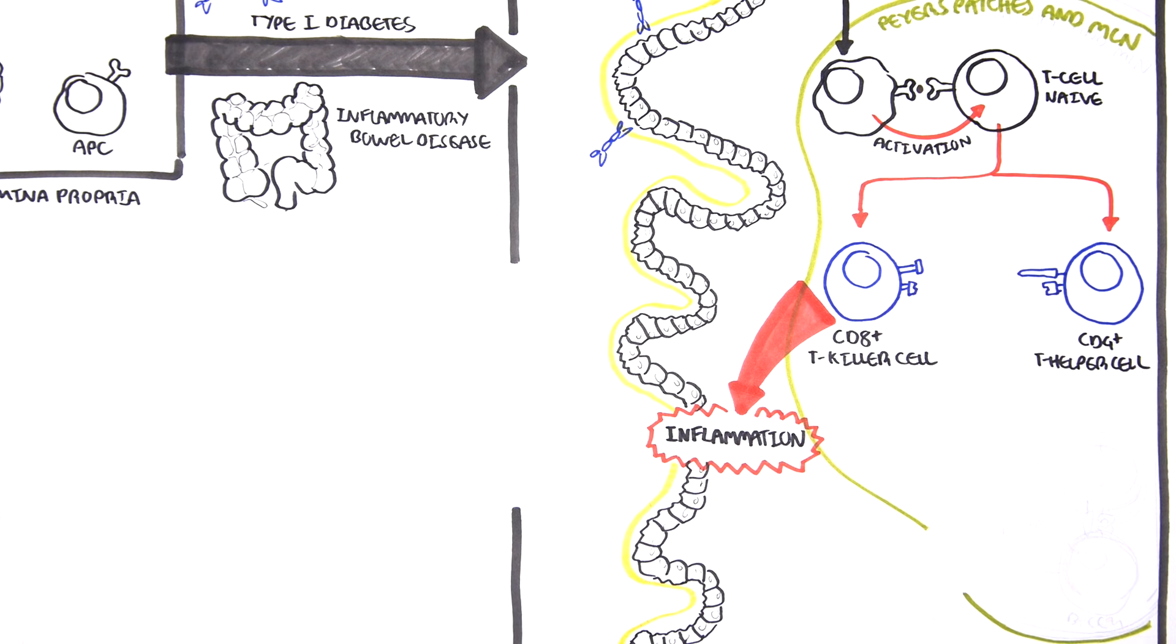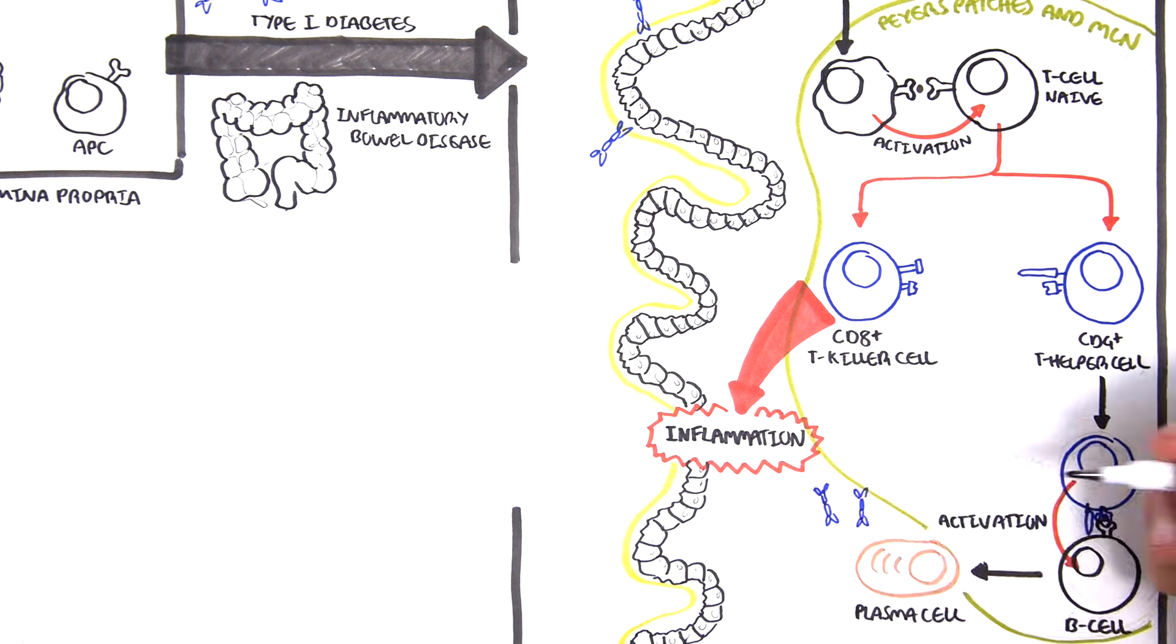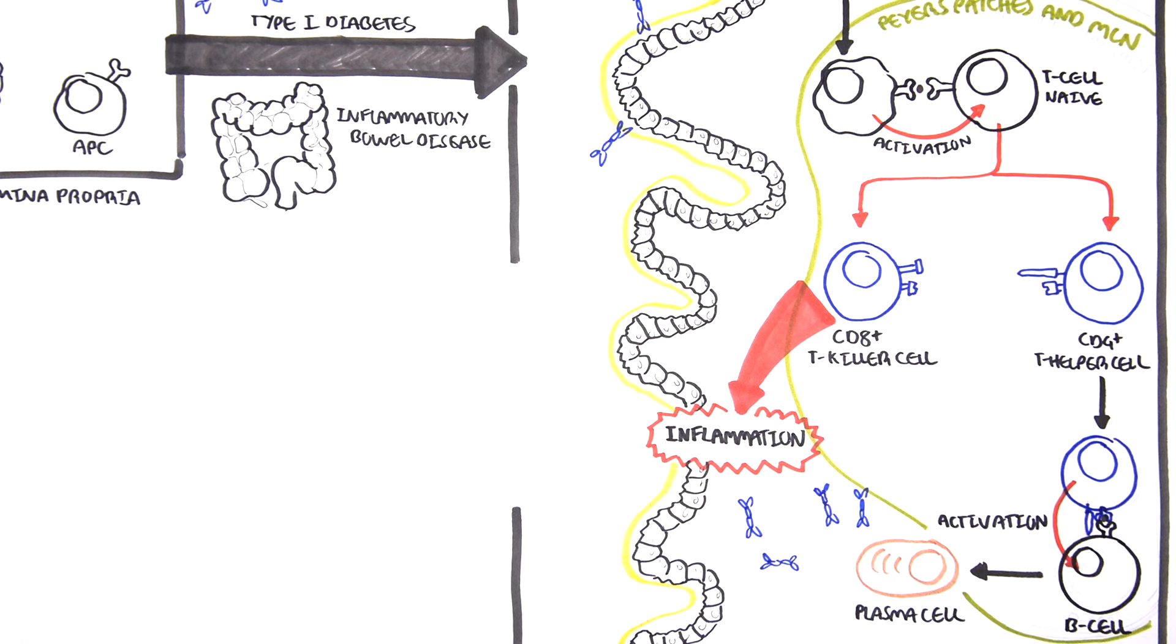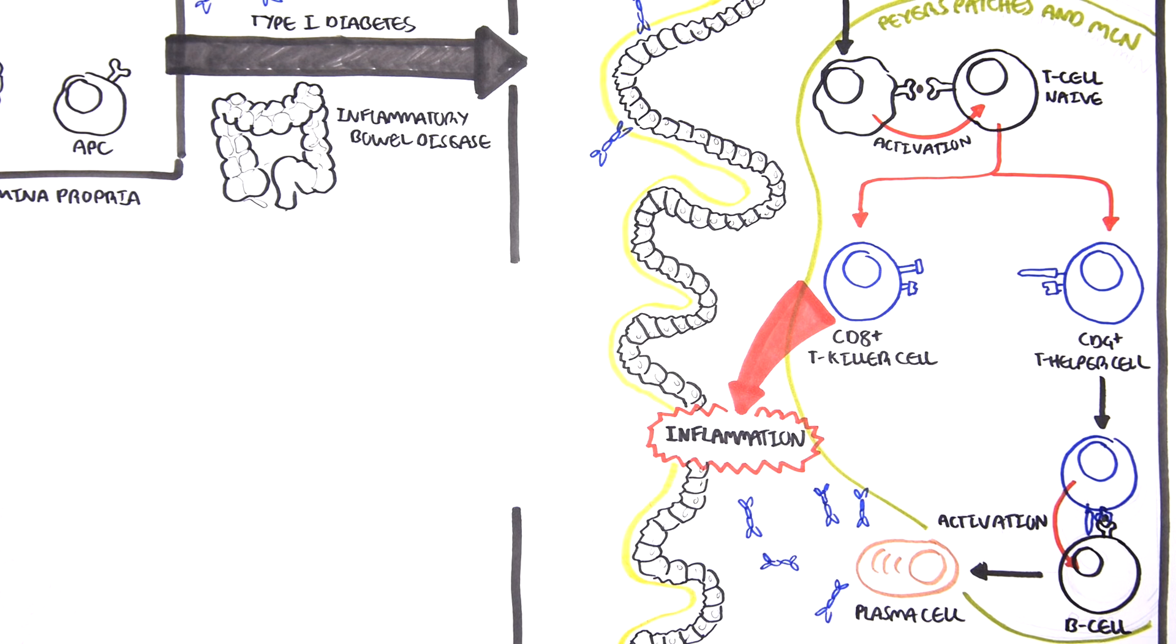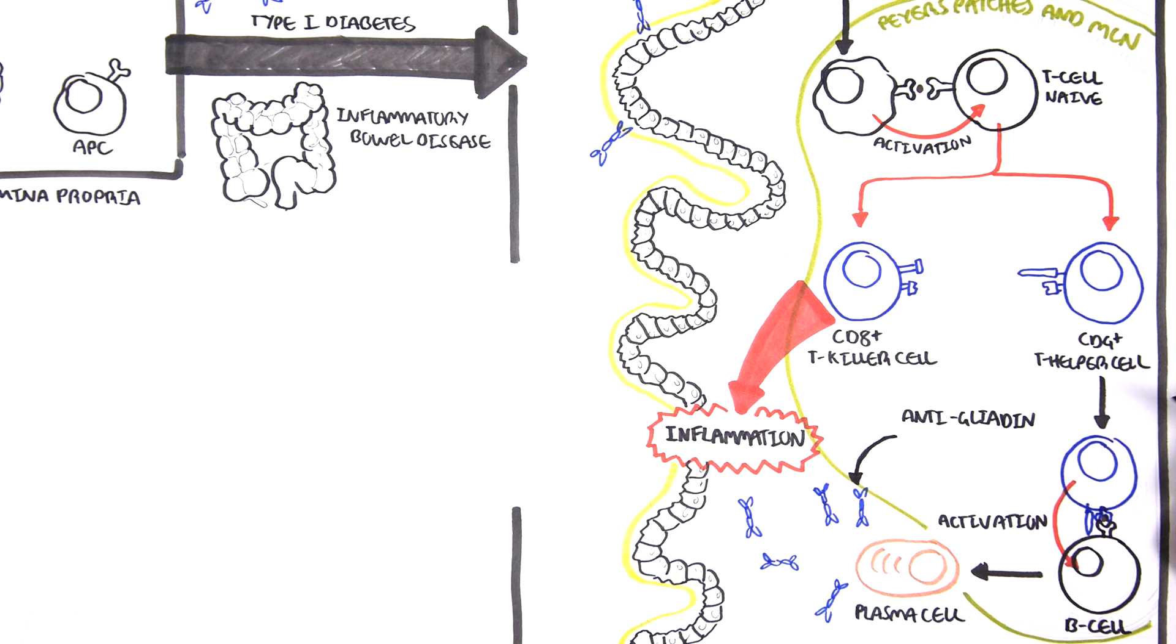The CD4 T cells, as the name suggests, they help. They actually help another cell called B cells. What they do is they help activate B cells. The activation of B cells means that these B cells can mature and become plasma cells. And plasma cells are the cells that produce our antibodies. So, in this scenario, this plasma cell will produce antibodies against gliadin.